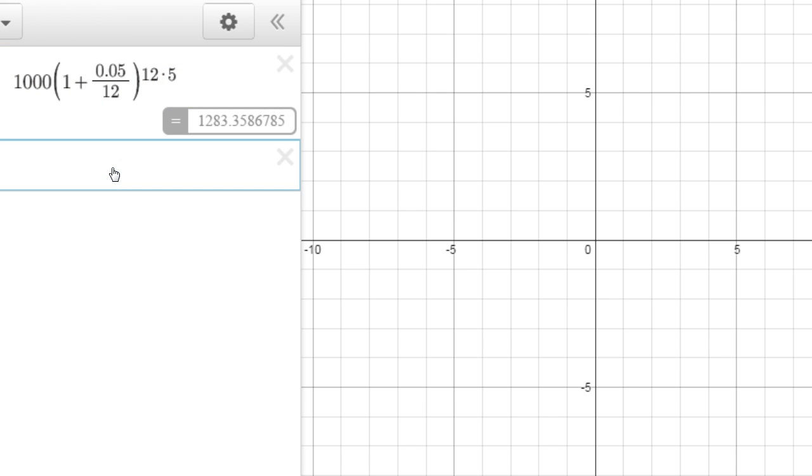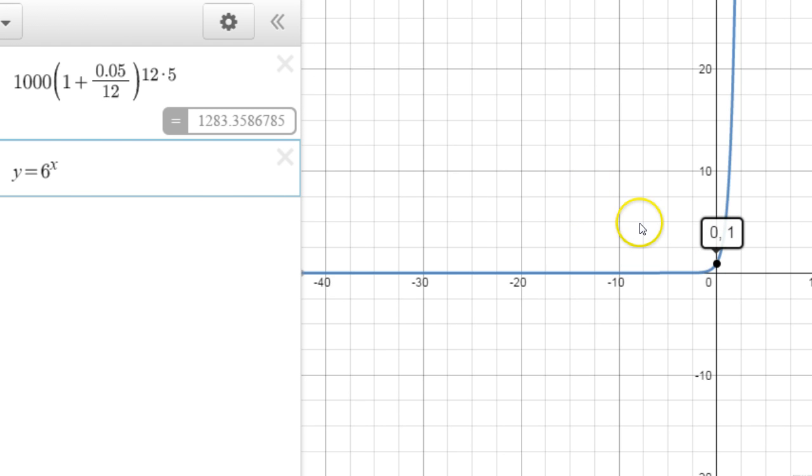Now if you wanted to graph some exponential functions, just make sure you have the x in the exponent. Make sure that the exponent cursor is up here. Now the cool thing about all exponential functions, unless you have another number being multiplied out here, the exponential functions will pretty much intercept the y-axis at 1. And why is that? Well, 4 to the 0 is definitely going to be 1. Now as you can see, the more I change this base, the steeper it gets. Let me zoom out a little bit.